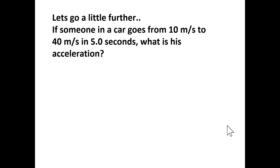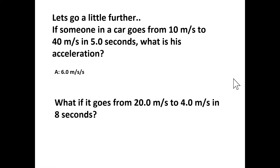If someone in a car goes from 10 meters per second to 40 meters per second in 5 seconds, what is her acceleration? Acceleration is change in velocity over time. The change in velocity is 40 minus 10 equals 30 meters per second over 5 seconds, giving an acceleration of 6 meters per second squared. What if it goes from 20 meters per second to 4 meters per second in 8 seconds? Final minus initial: 4 minus 20 equals negative 16 meters per second, divided by 8 seconds, gives negative 2 meters per second squared.